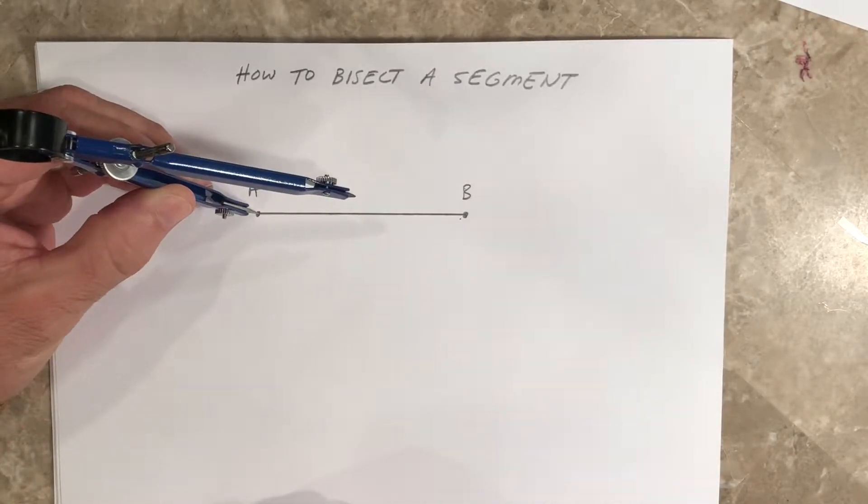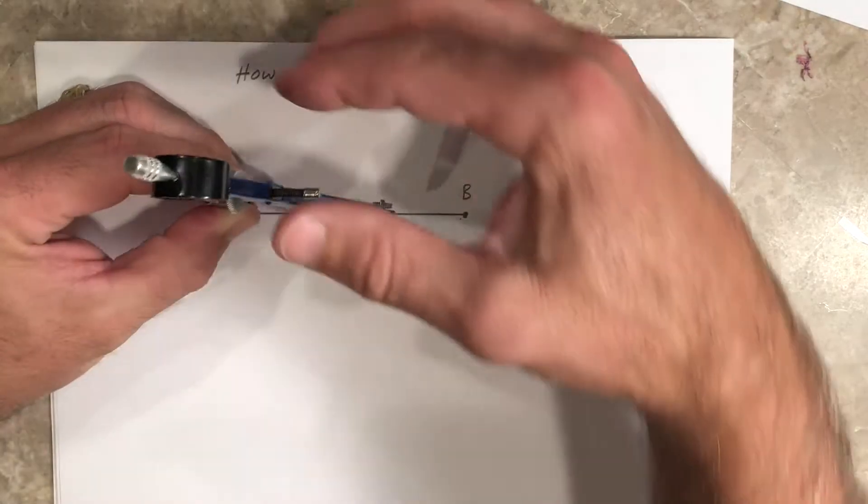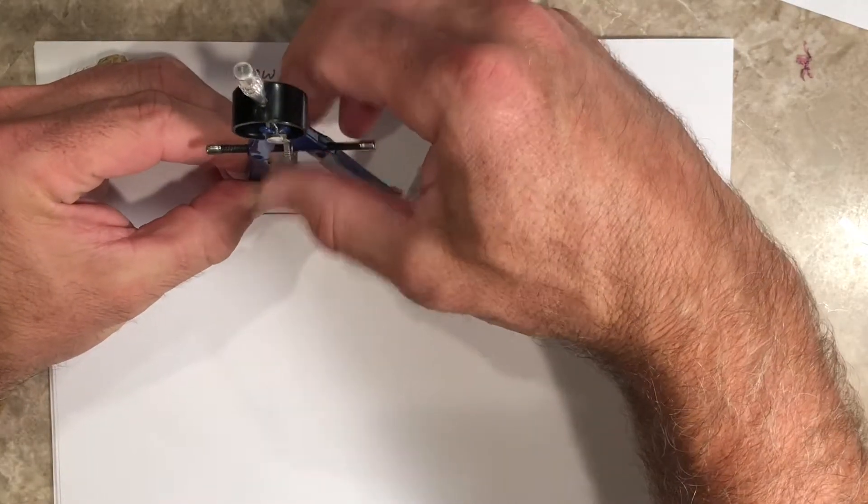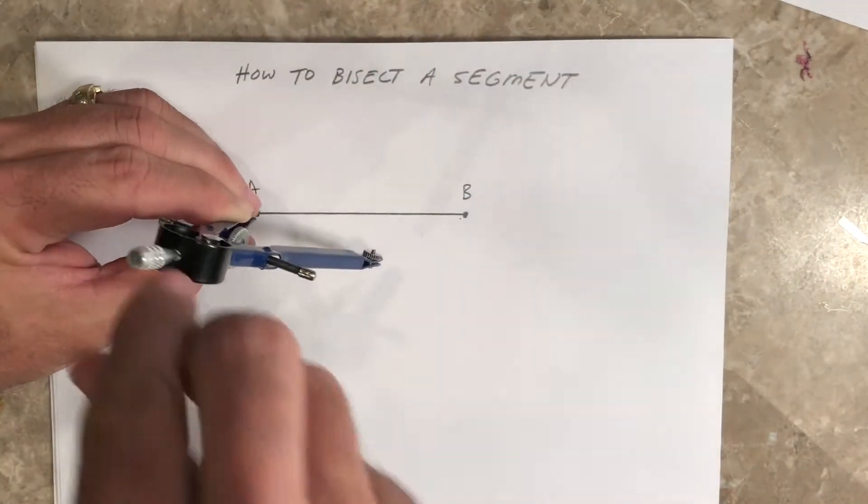Basically, you're going to take your compass, put it on point A, and make sure it's opened up more than halfway. It won't work if it's not opened up halfway.